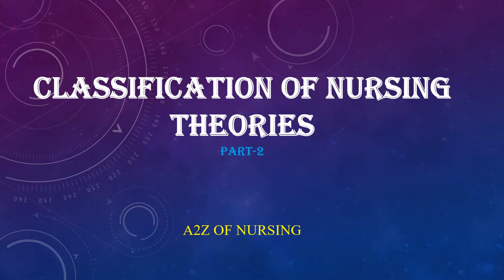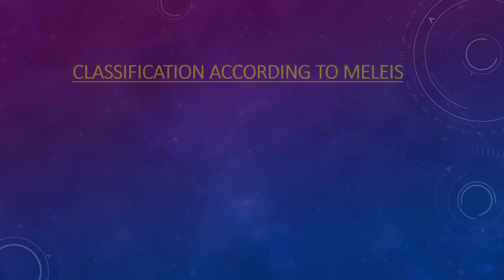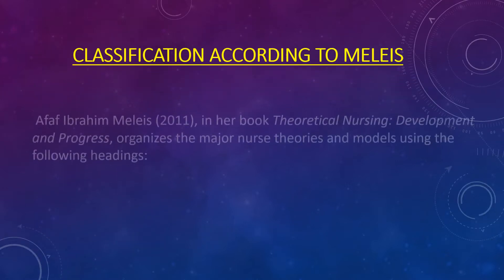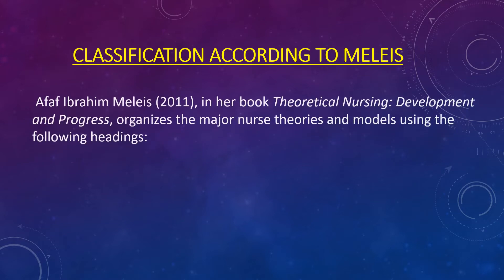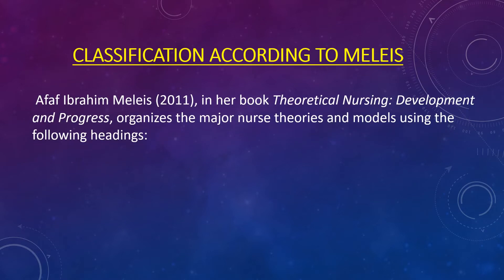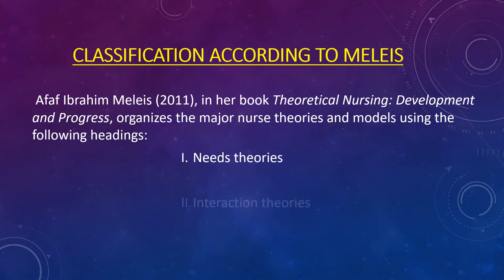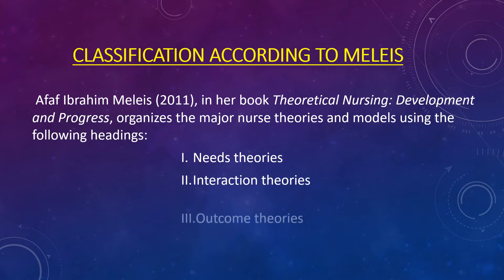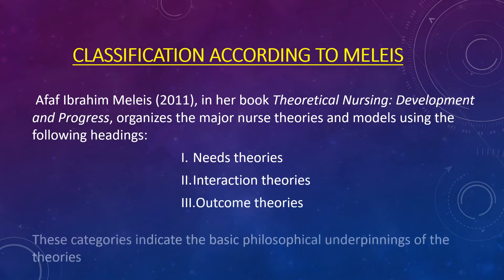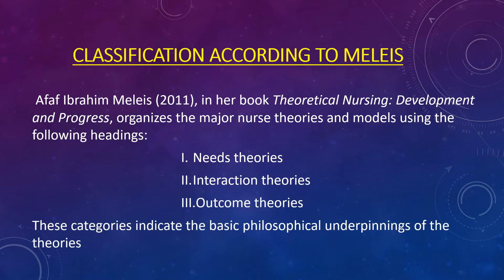Here we have another classification according to Malais. Afaf Ibrahim Malais in 2011, in her book Theoretical Nursing Development and Progress, organizes the major nursing theories and models using the following headings: need-based theories, interaction theories, and outcome theories. These categories indicate the basic philosophical underpinnings of the theories.